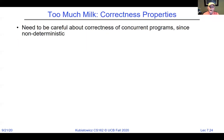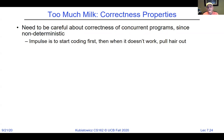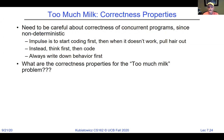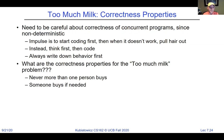Correctness properties for the too much milk problem: never more than one person buys, and somebody buys if needed. We need to be careful about correctness of concurrent programs since they're non-deterministic. The impulse is to start coding first and pull your hair out when it doesn't work. Instead, think first, code later — always write down the behavior and correctness constraints first before implementing.